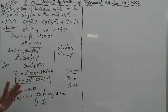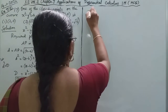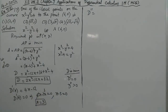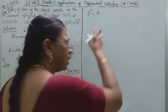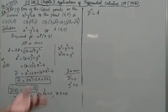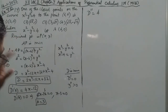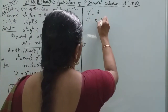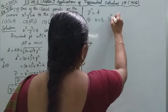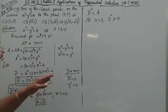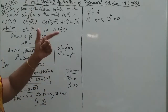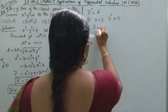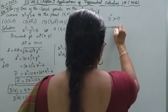Now let us check the second derivative D double dash. Differentiating D dash, we get D double dash equals 4, which is independent of x. At x equals 3, D double dash equals 4, which is positive. Therefore, D is minimum at x equals 3.